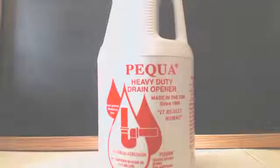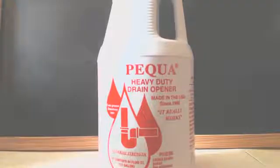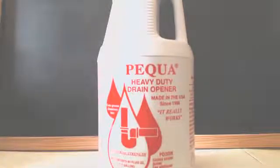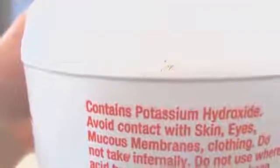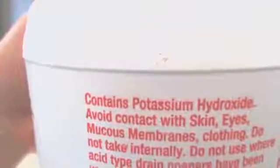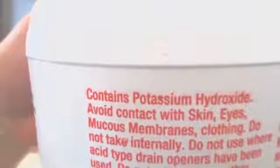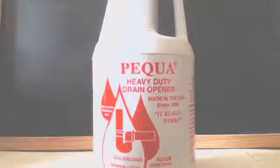Well this is John Black, super chemist. We're here to make some potassium carbonate. We're going to start out with this Pequa heavy-duty drain cleaner you can get at Lowe's or any hardware store. As you can see from the back it contains potassium hydroxide. I looked up the MSDS - it says it's 45% potassium hydroxide, 55% water.